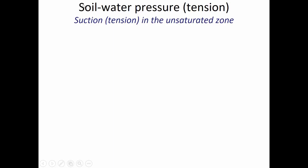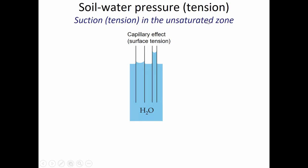One factor affecting water movement through soil is soil water pressure — though it's pressure in name only. What it really is, is a tension or suction effect that occurs in the unsaturated zone, which is the part above the water table where there's some air in the soil in addition to water. If you remember the capillary effect from fluid mechanics — if you stick a glass tube down into water, the water rises up inside the tube.